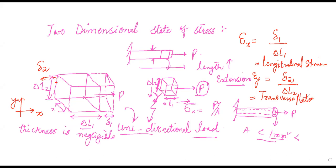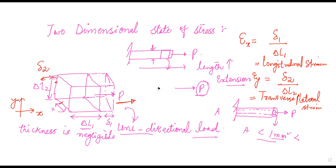The loading is only along one direction — we have a load only along the x-axis — but the effect of this load is also along the other axis. We are neglecting one dimension, the thickness of the machine element. So under the influence of the load acting along one direction, we have strains along both x and y directions — the longitudinal strain and the lateral strain.